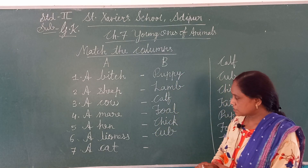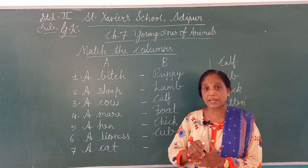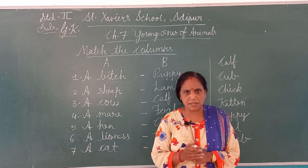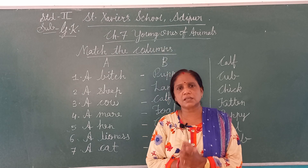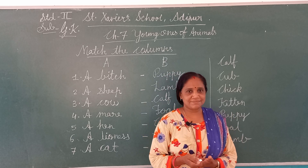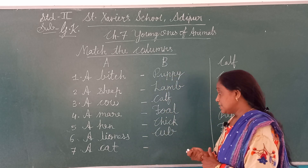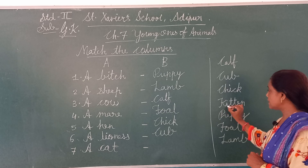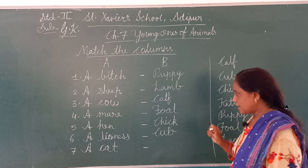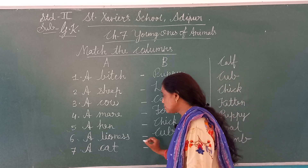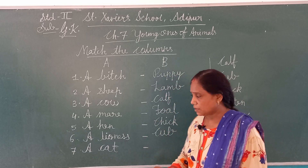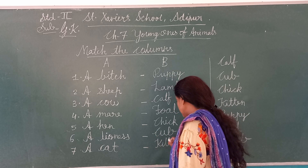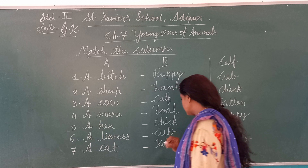Now last one — a Cat. सबको पसंद है ना cat? मियाव करती है, आती है घर में। तो उसके जो छोटे-छोटे बच्चे होते हैं, उनको क्या बोलेंगे? It starts with the letter K — K-I-T-T-E-N, Kitten. बिल्ली के बच्चे को Kitten बोलते हैं। तो a Cat के सामने लिखेंगे K-I-T-T-E-N.